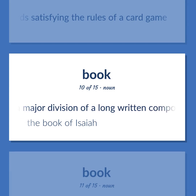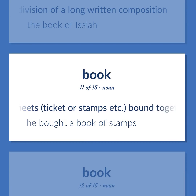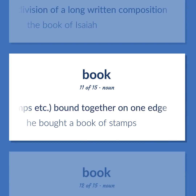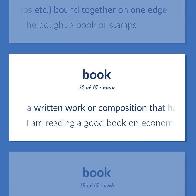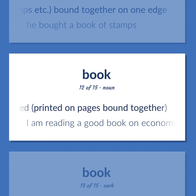A major division of a long-written composition. The book of Isaiah. A number of sheets, ticket or stamps etc., bound together on one edge. He bought a book of stamps. A written work or composition that has been published, printed on pages bound together. I am reading a good book on economics.